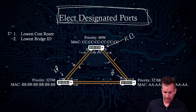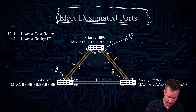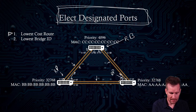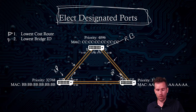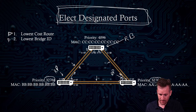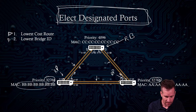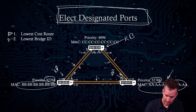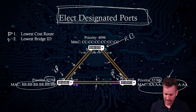For the link between switch two and switch three, the cost from each direction is the same, so the first criterion doesn't apply. We move to the second criterion: the lowest bridge ID. We compare the priorities — they're the same — then we look at the MAC addresses, and one is lower, so that side becomes the designated port. The same logic applies to the last link.